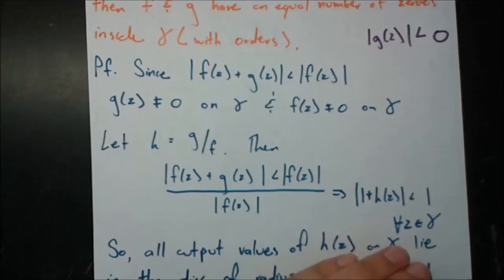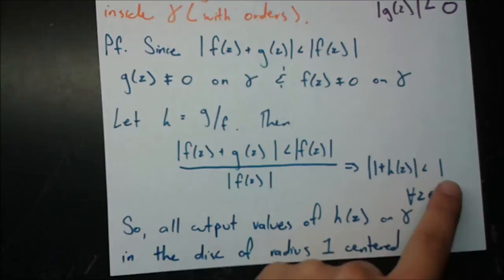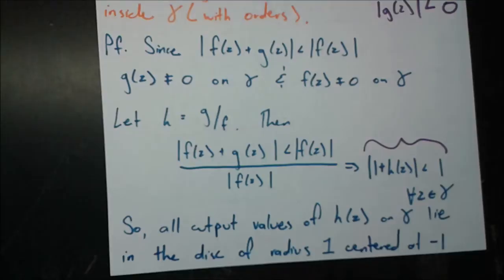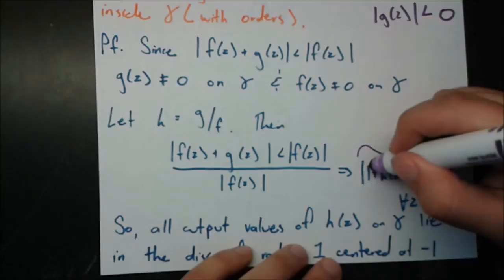This inequality tells us where the range of h lies — it's true for all z on gamma. All output values of h(z) on gamma lie in the disk of radius 1 centered at negative 1. This is indeed a disk centered at −1 with radius 1. Let's see this graphically — I've drawn the picture right here: the disk centered at −1 with radius 1.